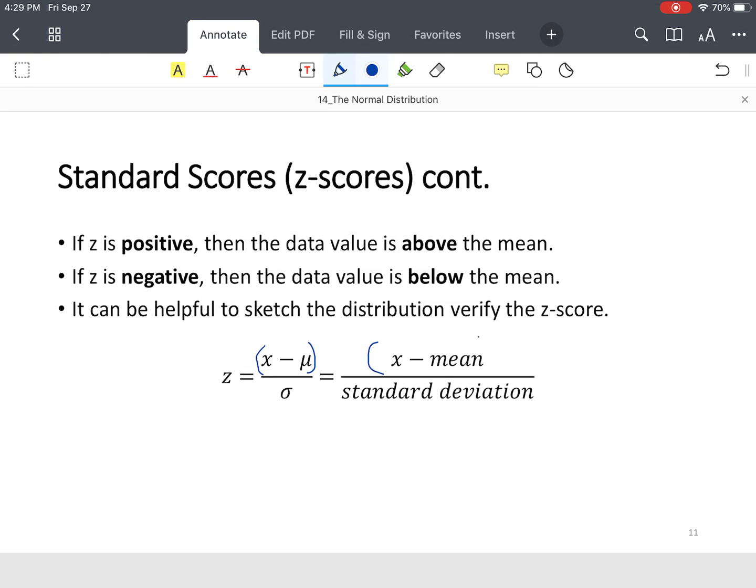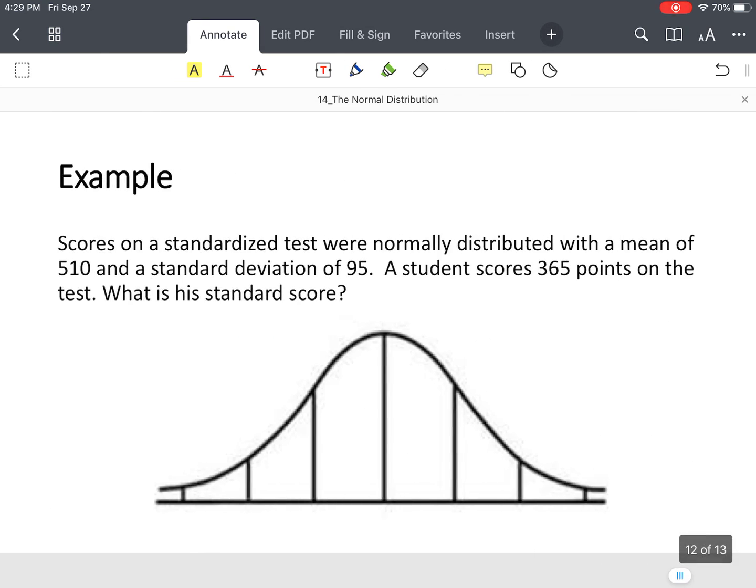If you're using a calculator, make sure, especially if it doesn't have a fraction key, that you put your numerator in parentheses. If not, your answer will be incorrect in most cases. So let's look at an example. The mean is 510, the standard deviation sigma is 95, and we want to see what's the standard score for a student who scores 365 on this particular standardized test.